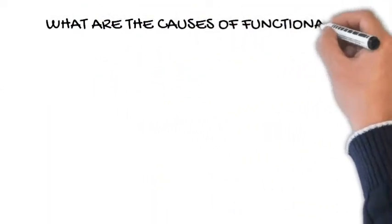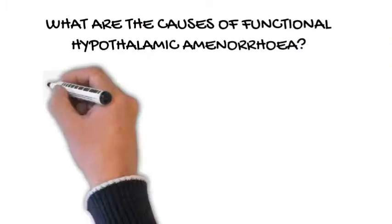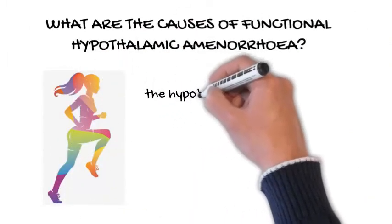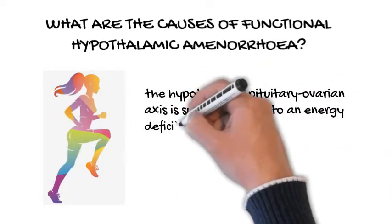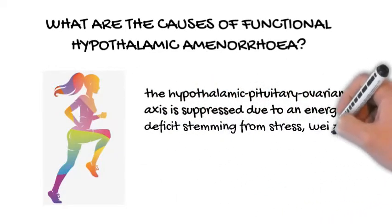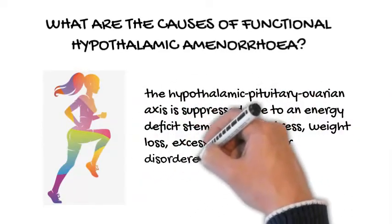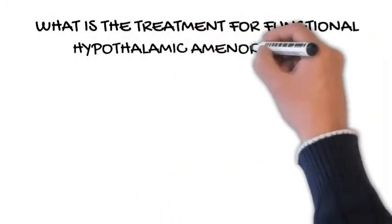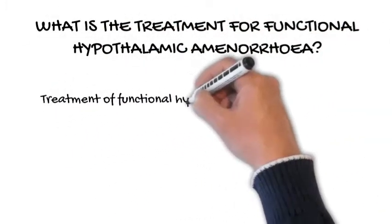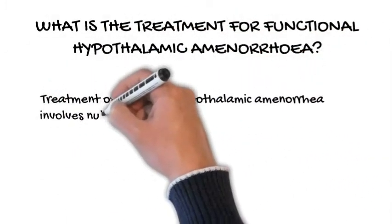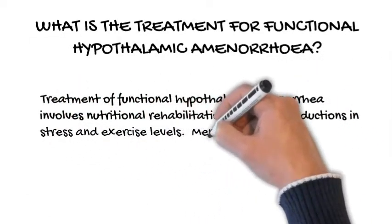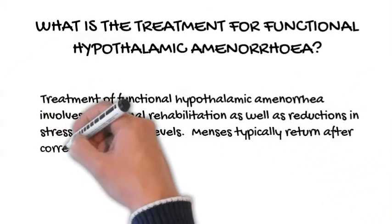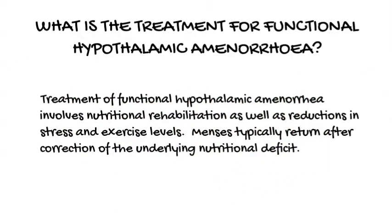What are the causes of functional hypothalamic amenorrhea? Functional hypothalamic amenorrhea occurs when the hypothalamic-pituitary-ovarian axis is suppressed due to an energy deficit stemming from stress, weight loss, excessive exercise, or disordered eating. Treatment involves nutritional rehabilitation as well as reductions in stress and exercise levels. Menses typically return after correction of the underlying nutritional deficit.